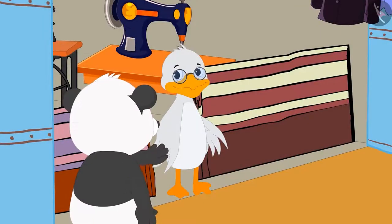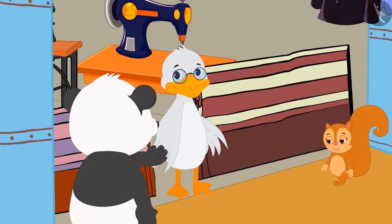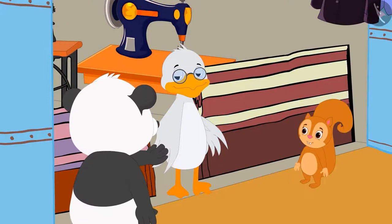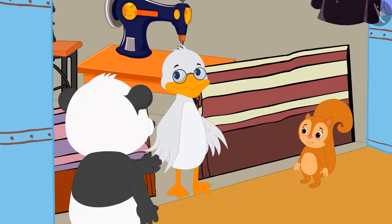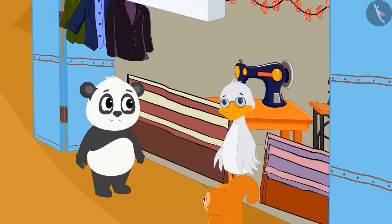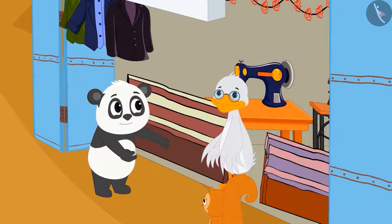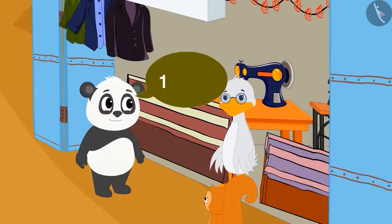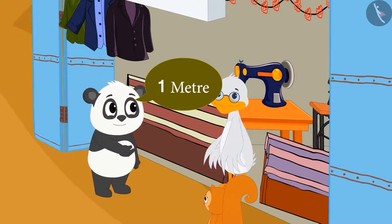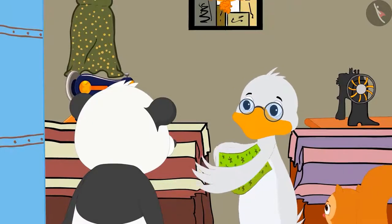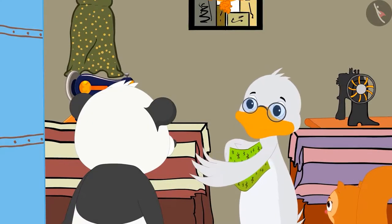When Chanda reached Barbole uncle's shop to get her curtain stitched, Golu was also there buying material for his shirt from uncle. Chanda saw that Golu asked uncle for a one meter long material, and uncle cut the material as long as his arm length.